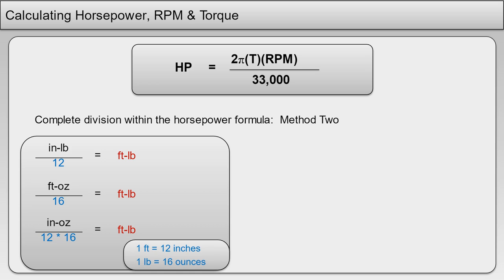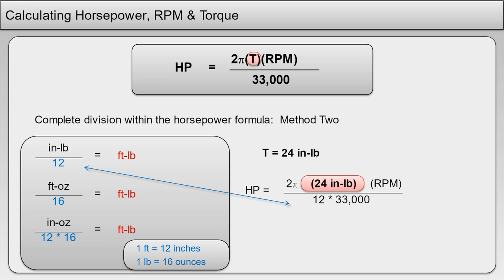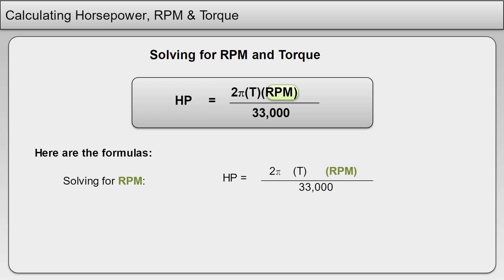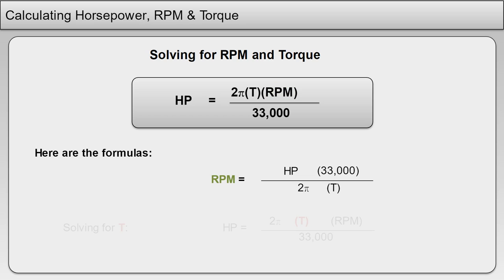Looking at the same problem we just solved using the first method: if torque equals 24 inch-pounds, we would use 24 inch-pounds for torque and 12 multiplied by 33,000 as the denominator. In some situations, you might have to solve for RPM or torque when horsepower is known. Solving for RPM: RPM equals horsepower multiplied by 33,000 divided by the quantity 2 pi multiplied by torque. Solving for T: T equals horsepower multiplied by 33,000 divided by the quantity 2 pi multiplied by RPM.